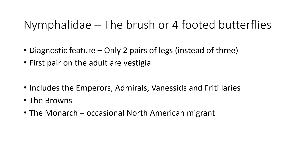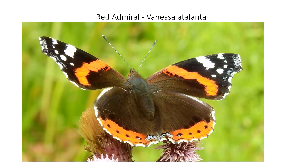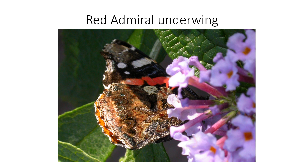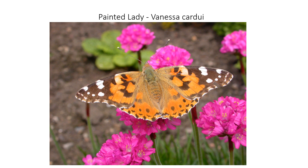Next are the Nymphalidae. Red admiral — I don't think you're going to mix this up with any other butterfly. The bright red streaks down the middle of the wing and the white tips are fairly distinctive. When the wings are closed you just get the underwing showing, but even then this little white blotch will identify it as a red admiral. You'll be able to see the comparison with the painted lady in a minute.